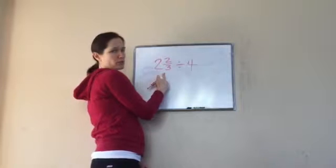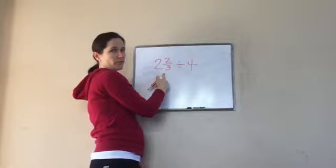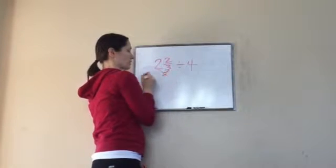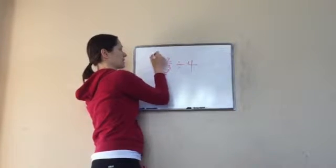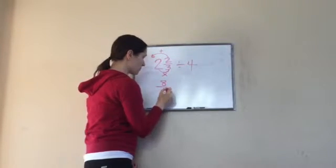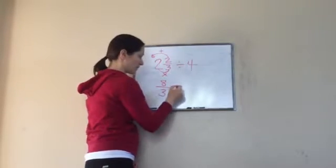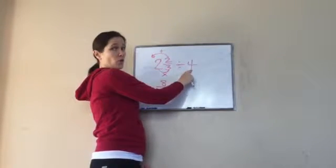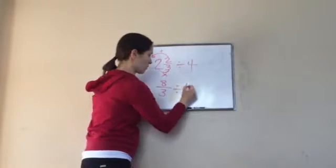So do you remember what we do to this one? You make it improper. Make it improper, very good. So I have 2 times 3, and then 3 times 2 is 6, and 6 plus 2 is 8. So this one becomes 8 over 3, very good. Now I'm going to leave my division symbol for now. And then this 4 becomes what as a fraction? 4 over 1.